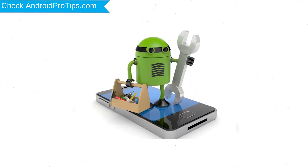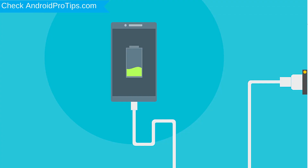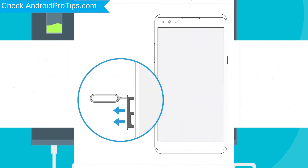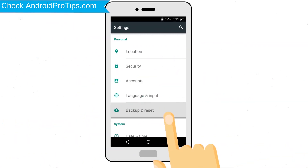Before resetting your mobile, your mobile battery must be above 50%. Remove SD cards and SIMs. Back up your Android mobile data if possible.